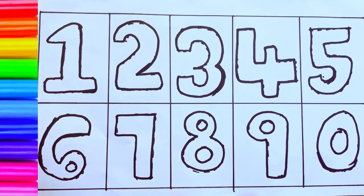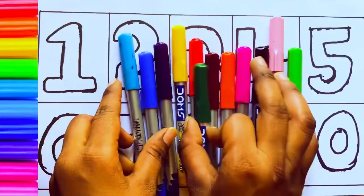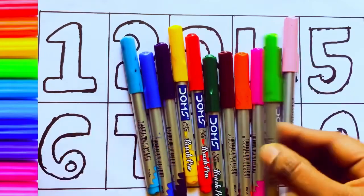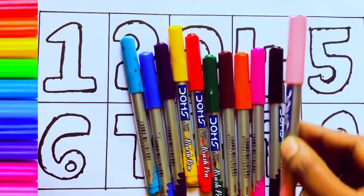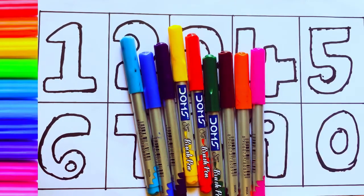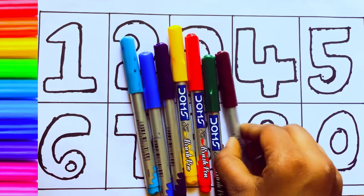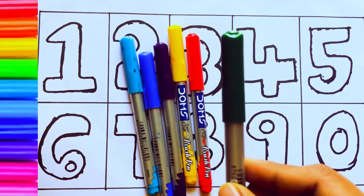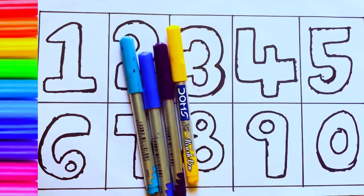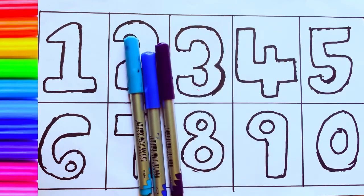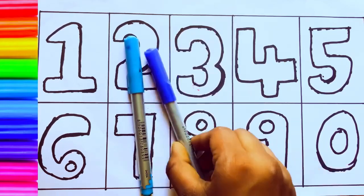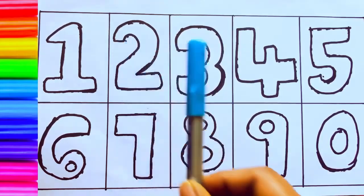Let's introduce some color pencils. These are color pencils. Let's see the names: light green color, pink color, black color, orange color, brown color, green color, red color, yellow color, violet color, blue color, and sky blue color.